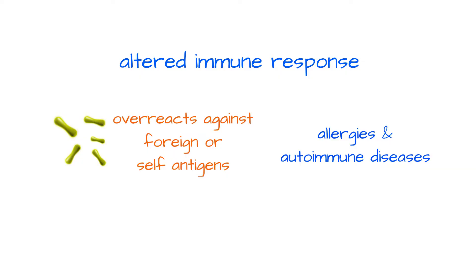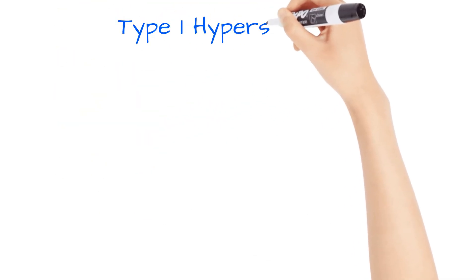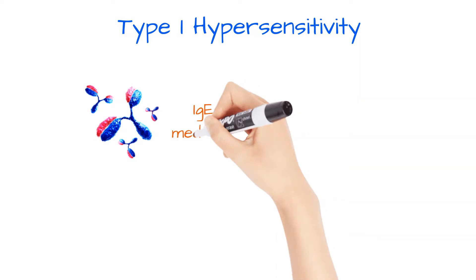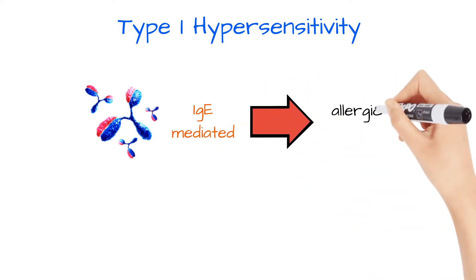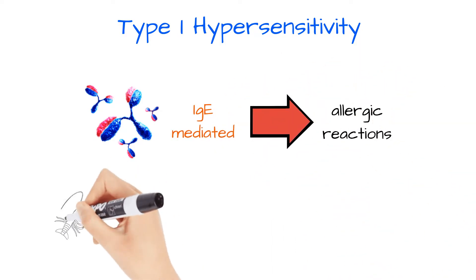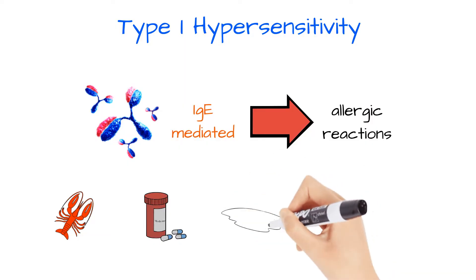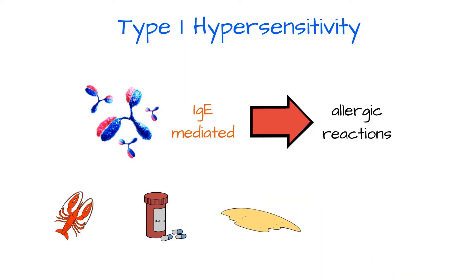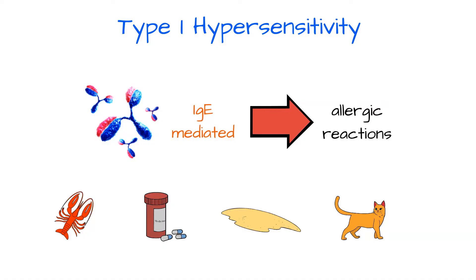There are four types. Type 1 is IgE-mediated and is typically associated with allergic reactions to antigens found in foods, drugs, pollen, dust, animal dander, molds, and things like that.